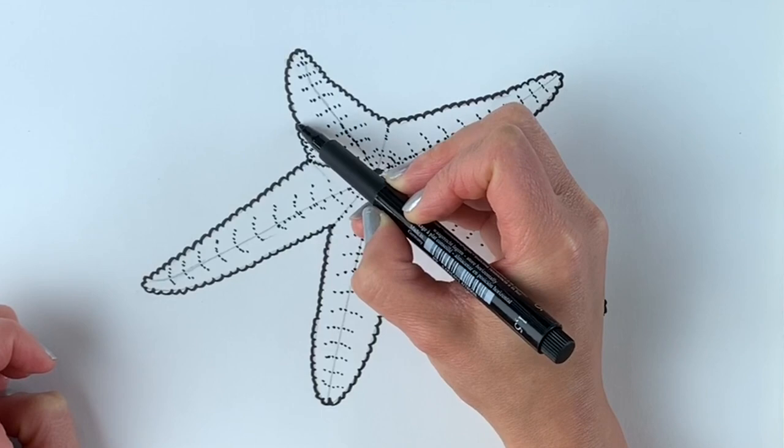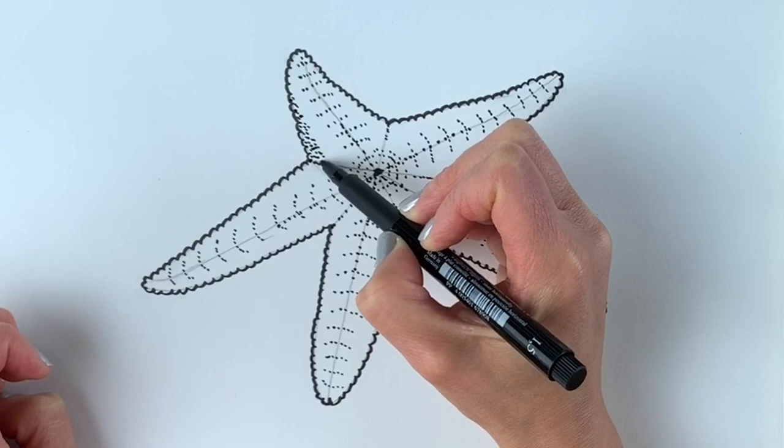We can show that this is slightly darker. So just increase the number of dots in an area to make it darker. Just like that.